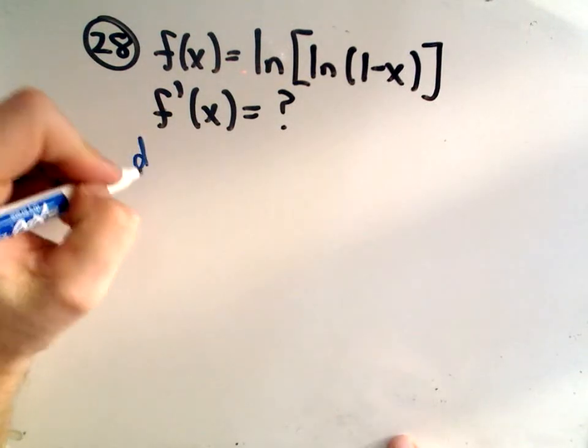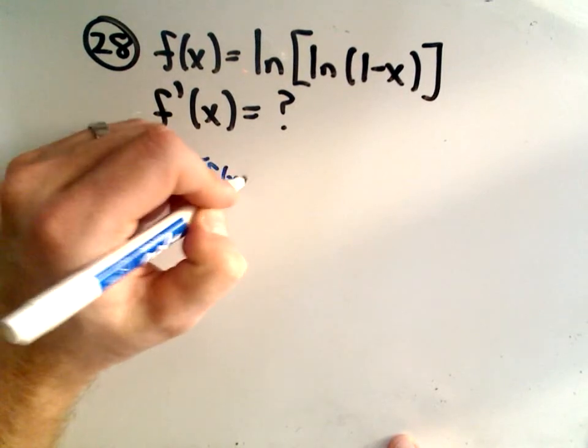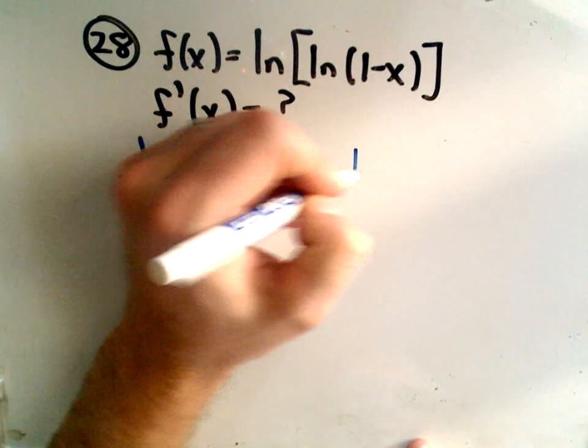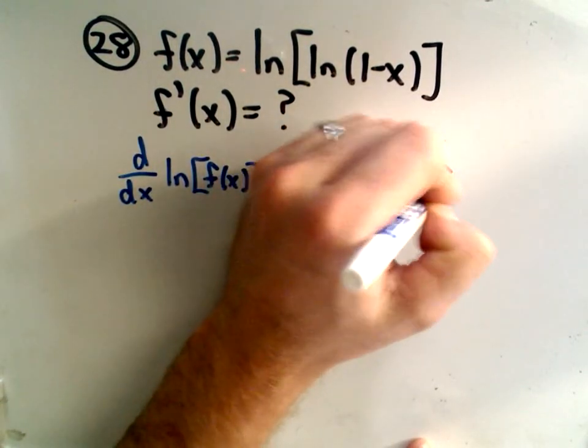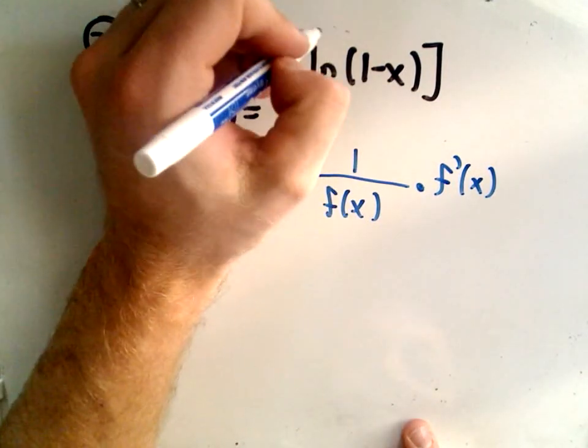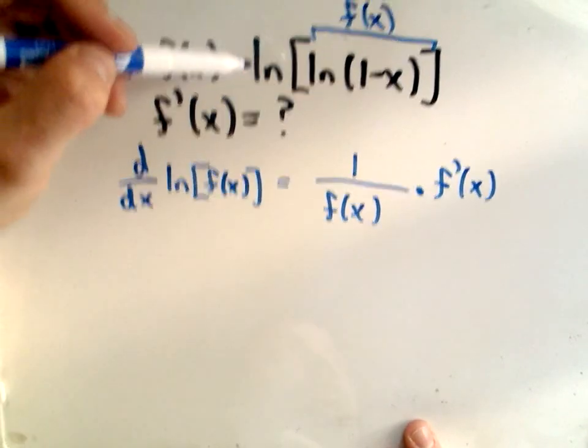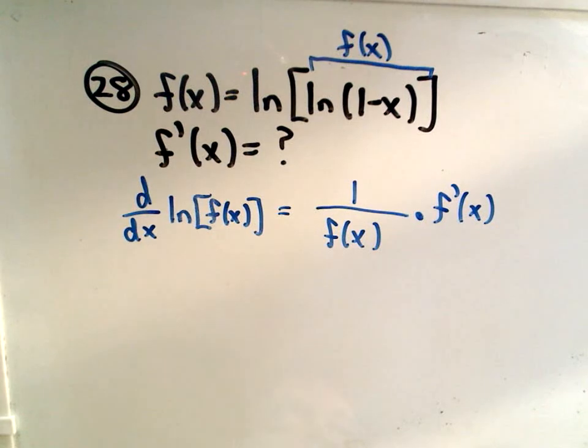This is just a do-you-know-your-formulas type of problem more than anything. Remember the derivative of ln of some stuff. It could be kind of complicated what's next to the ln. The derivative formula says we get 1 over whatever's next to the ln, but then we have to multiply it by the derivative of what's next to the ln.